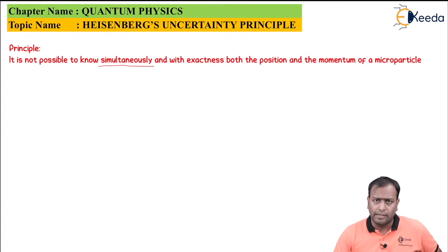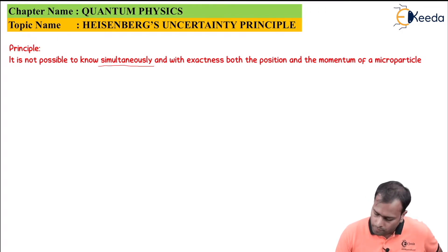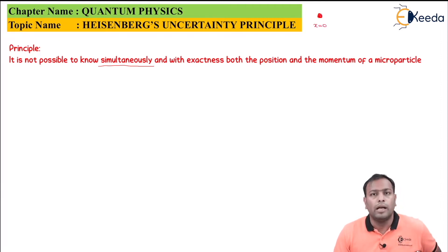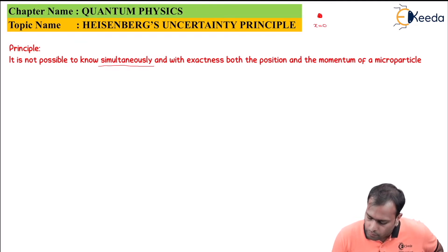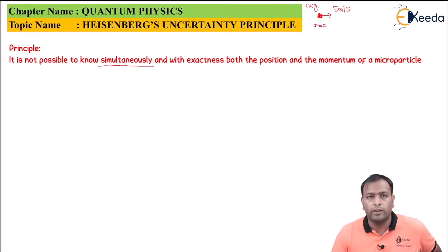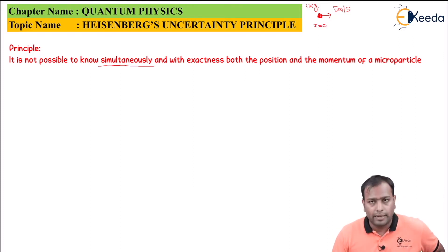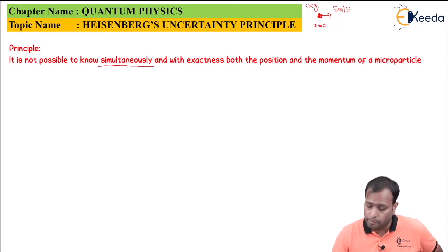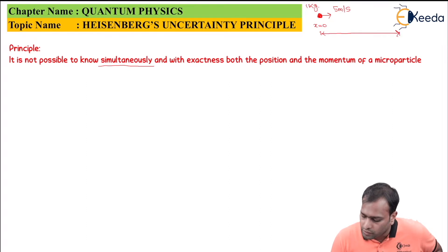To make this clear, let's take an example of a ball. I have a ball at a location x = 0, and it moves at a speed of 5 meters per second. Assuming the mass of the ball to be 1 kg, you already know the momentum — the momentum is 5 units. If I tell you to find the position of the ball after 2 seconds, it won't be difficult: after 2 seconds it would be at a distance of 10 meters from the starting position.